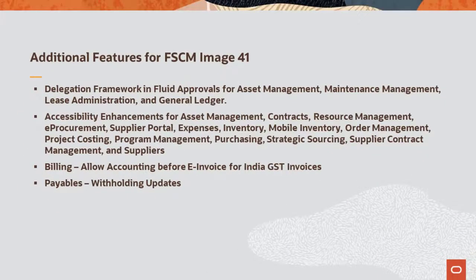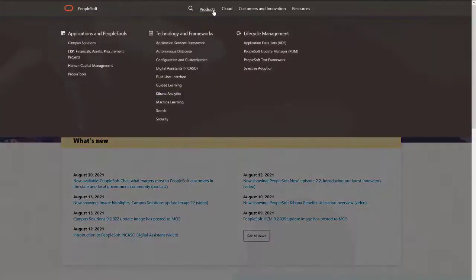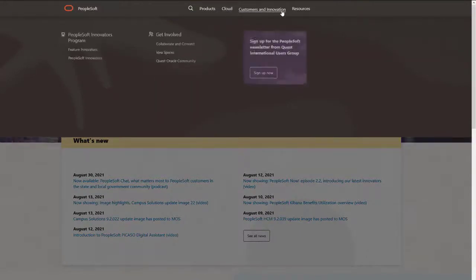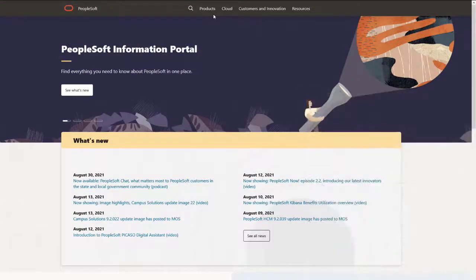Additional features added for FSCM Update Image 41 include using the Delegation Framework feature for Asset Management, Maintenance Management, Lease Administration, and General Ledger; accessibility enhancements for multiple products; allowing accounting before electronic invoices for GST invoices and billing; and withholding updates in Payables. We've only shown you the highlights of the features in this PeopleSoft update image. For more information about these features and other enhancements, see the CFO tool, the Update Image Overview on My Oracle Support, and go to the PeopleSoft Information Portal for updates.